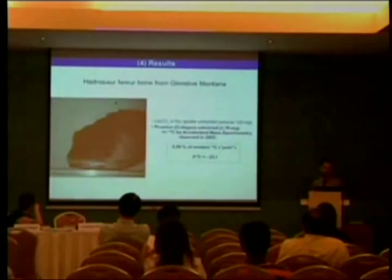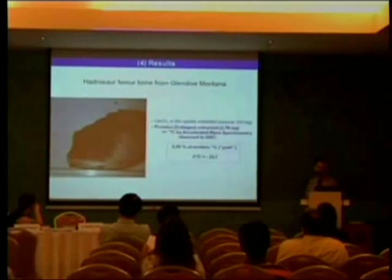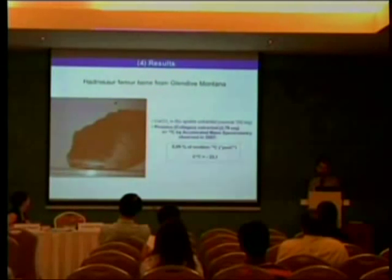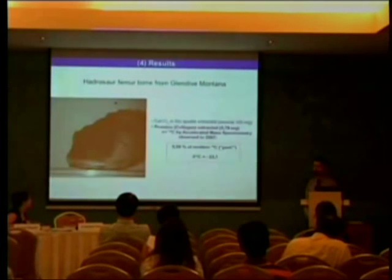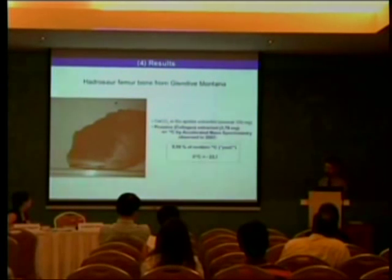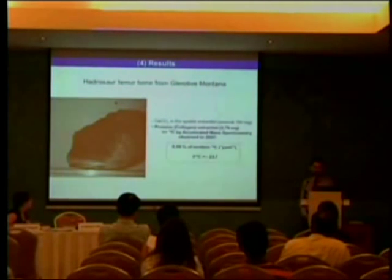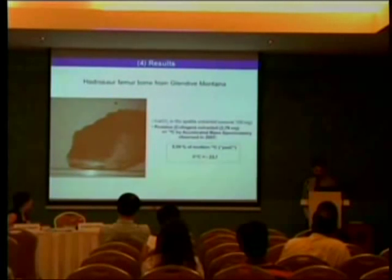This is a picture of a Hadrosaur femur bone from Glendive, Montana, where we were able to extract bio-apatite — several hundred milligrams — and even proteins and collagen were extracted: 3.79 milligrams in this Hadrosaur femur bone. A C-14 measurement by accelerated mass spectrometry performed in 2007 delivered a value of 5.59% modern C-14, and the Delta-13C was minus 23.7 per mil.